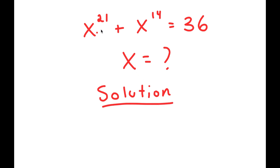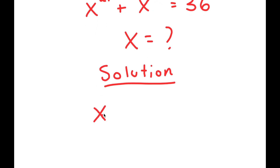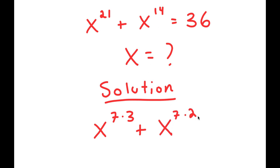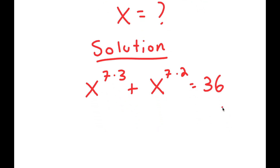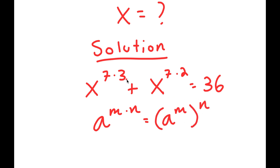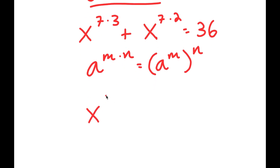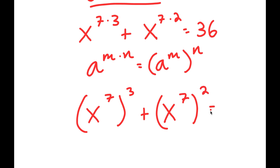What I'm first going to do is rewrite x to the power of 21 as x to the power of 7 times 3, and x to the power of 14 as x to the power of 7 times 2. Now, if I have something in the form a to the power of m times n, this equals a to the power of m to the power of n. So x to the power of 7 times 3 equals x to the power of 7 to the power of 3, and this plus x to the power of 7 to the power of 2 is equal to 36.